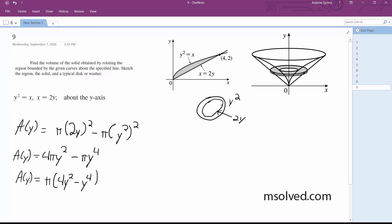So integrating all this stuff from zero to two, volume is equal to the integral from zero to two of π(4y² minus y²) dy. Integrate this, you end up with volume